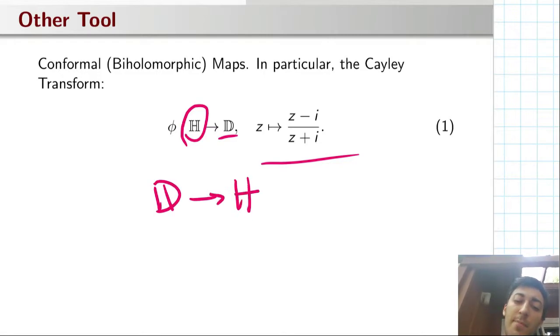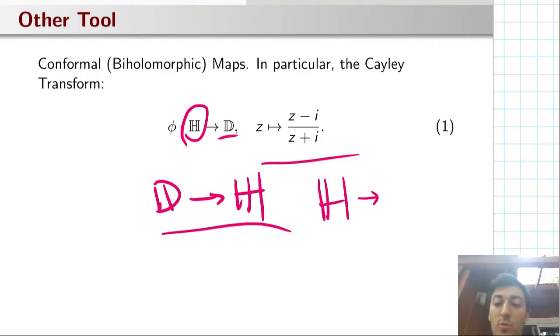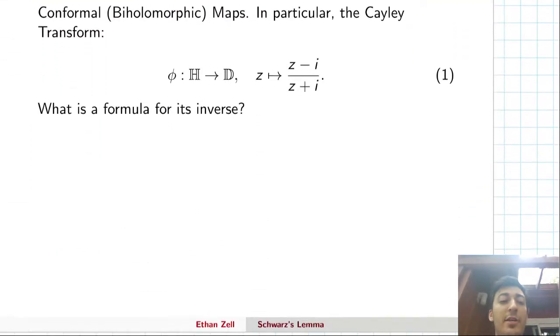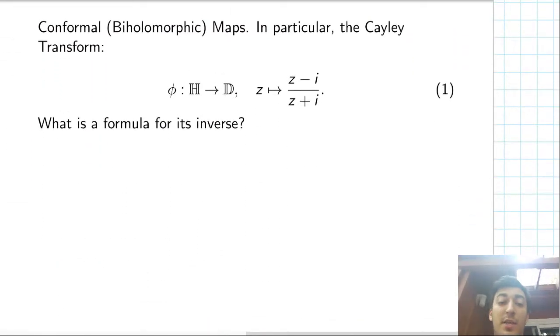But this is basically almost what we want. It's a conformal map from the upper half plane to the disk, but if we had a conformal map from the disk to the upper half plane, then we'd have exactly what we want because we'd be able to compose this map with our map f. And by composing them, we'd get a map from the disk to itself. So the natural question is, what is the inverse for this? And I'm actually going to leave this to you guys because that should be a good exercise.